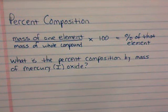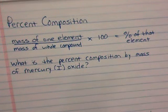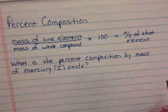When you need to calculate the percent composition of a compound, what you need to do is find out what is the percent by mass of one element out of that entire compound's mass.